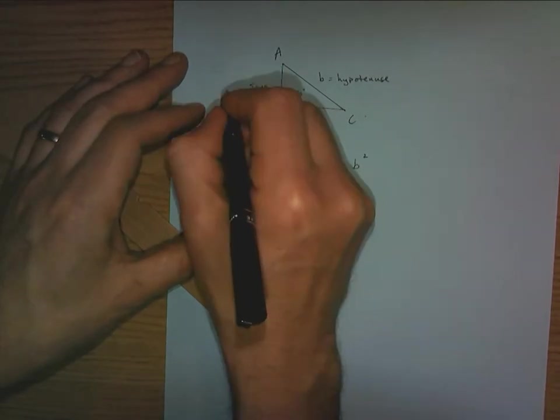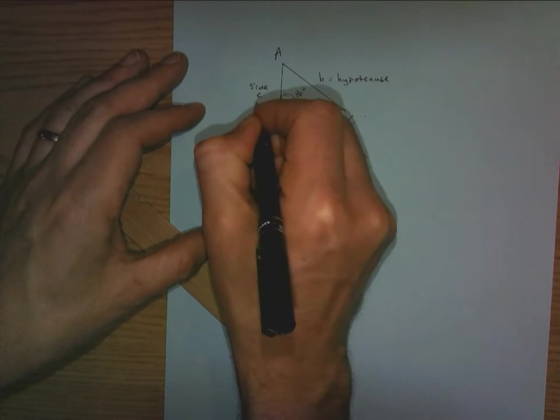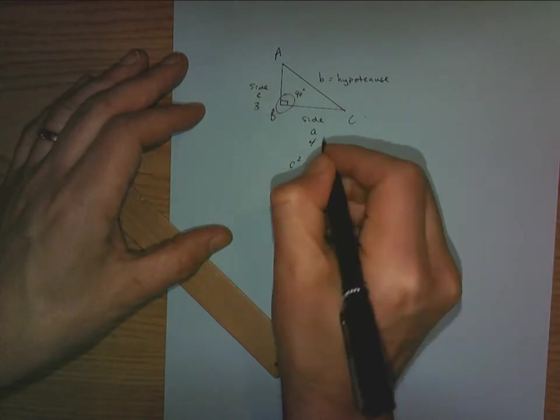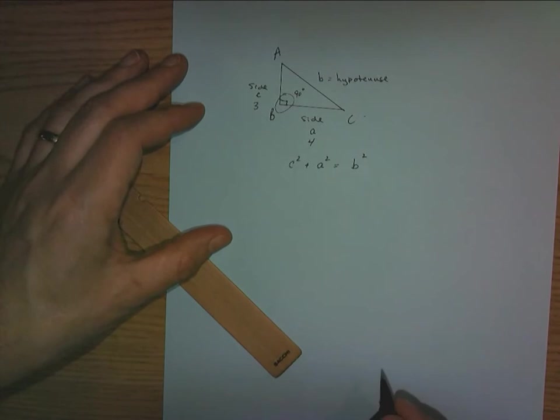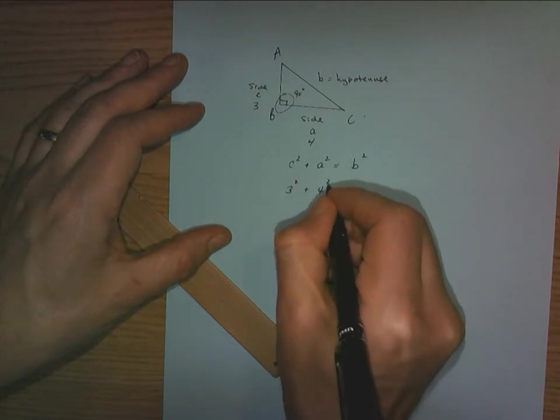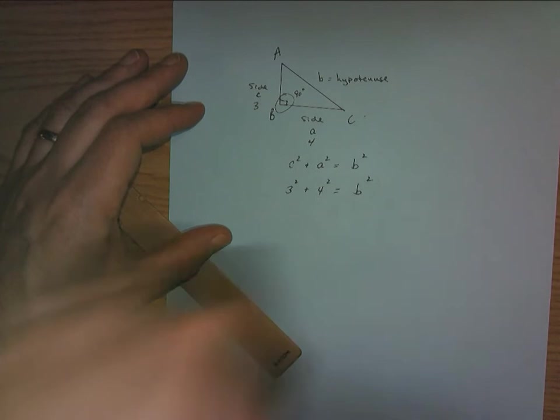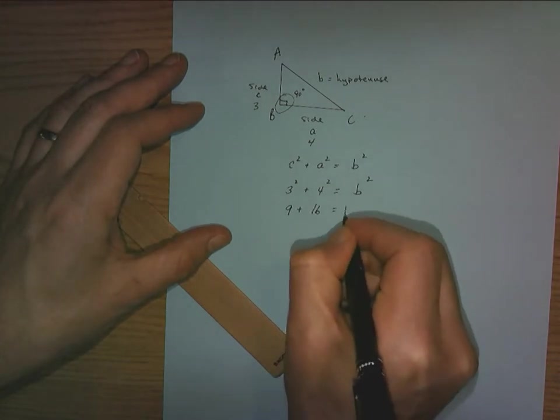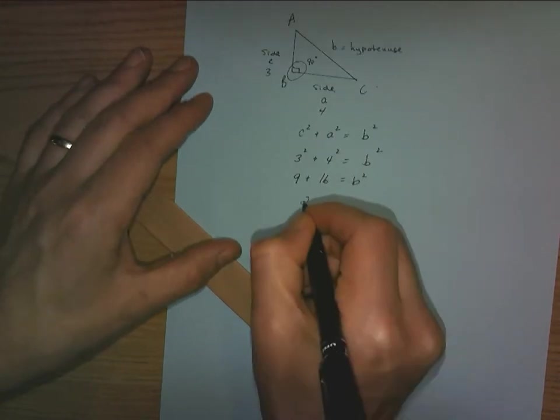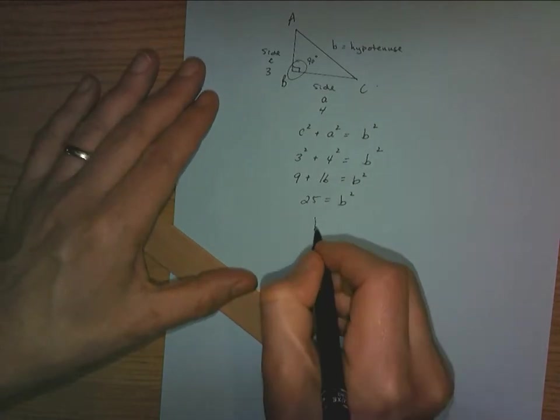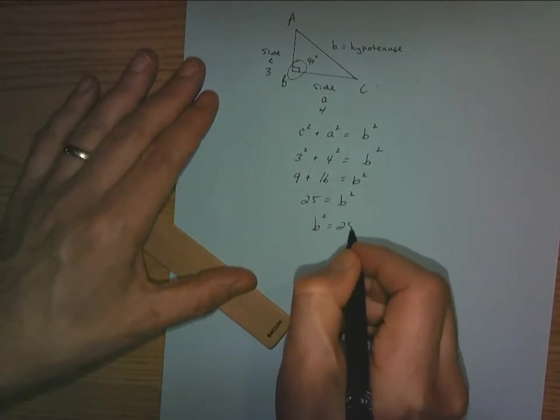Why don't we say that this is going to be, c is going to equal 3, I'm making this up. A can equal 4, and we're going to find out what b equals. So in this case it would be 3 squared plus 4 squared equals b squared. It would be 9 plus 16 equals b squared. 25 equals b squared, which gives us the question b squared equals 25.